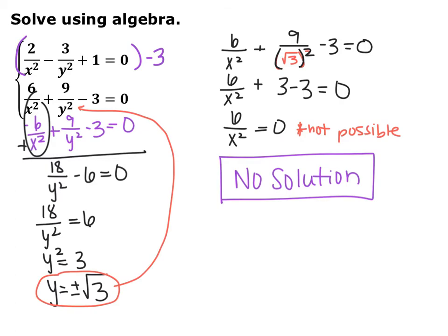Solving: 18y squared equals 6, so y squared equals 3, meaning y equals plus or minus the square root of 3. Plugging the positive square root of 3 into the second equation, I ended up with 6x squared equals 0. There's no way to divide 6 by something and get 0 unless the numerator is 0, so that's not possible. If you plug in the negative square root of 3, once you square it it becomes positive and you get the same result: 6x squared equals 0. So there is no solution to this system — they never intersect.